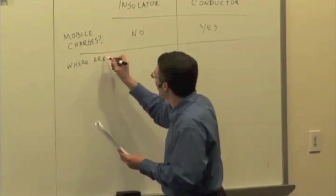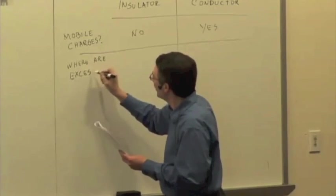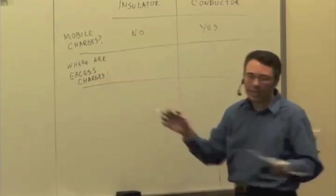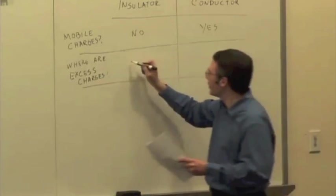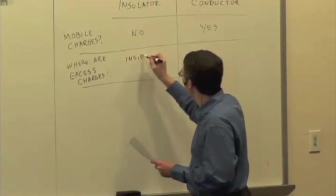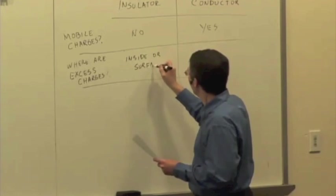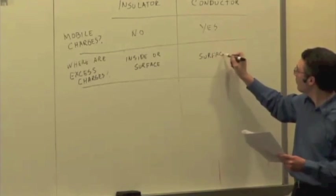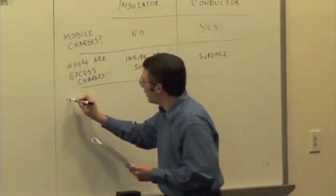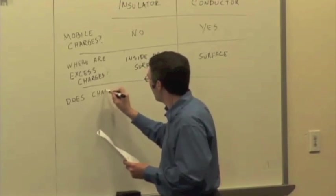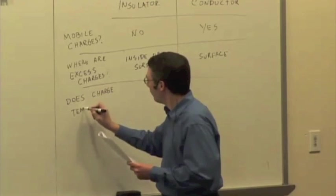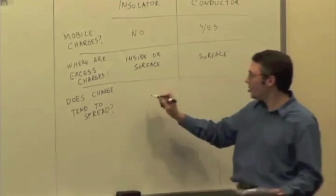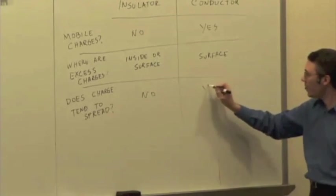Where are the excess charges? In an insulator, they can be inside, outside, on the surface, doesn't matter, right? Inside or surface. In a conductor, it's surface only. Does the charge tend to spread around? In an insulator, the answer is no. Conductor, it's yes.